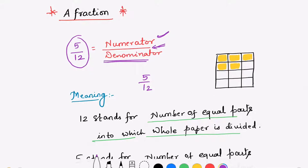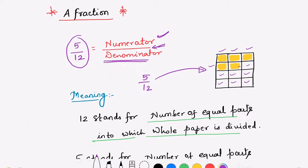5 by 12 is a fraction indicating something, so I have drawn a chart here — a group of 12 boxes. In this figure there are 12 boxes: 1, 2, 3, 4, 5, 6, 7, 8, 9, 10, 11, 12. Out of these 12 boxes, 5 boxes are colored with yellow: 1, 2, 3, 4, 5.